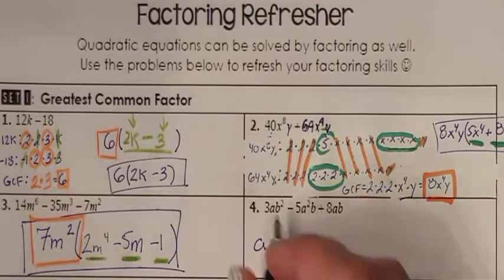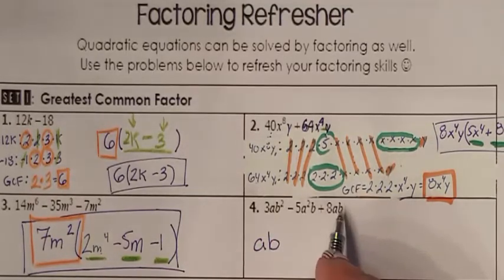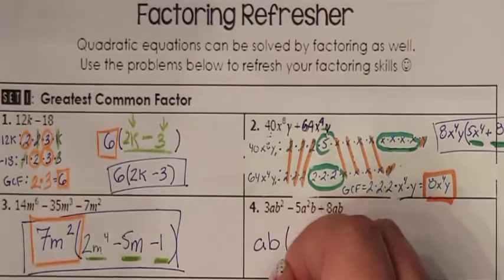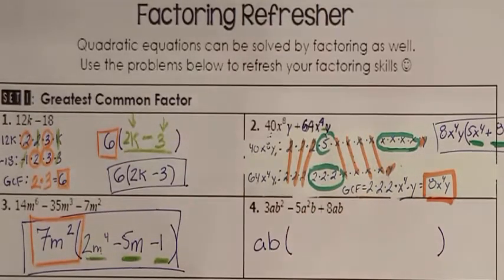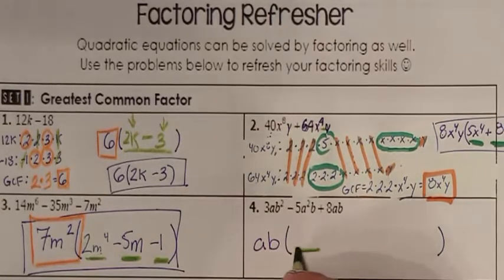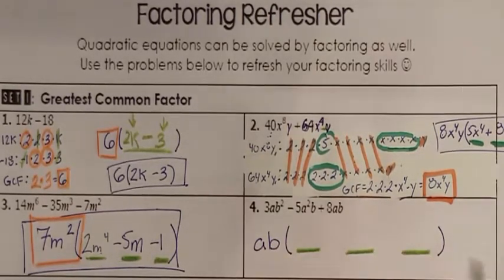I see they all have B's. The most amount of B's that I can take out of all of them is one. So A, B is my GCF. Now I just need to figure out what is my leftovers. Three terms meant three lists meant three leftover chunks.